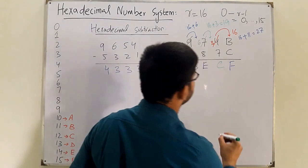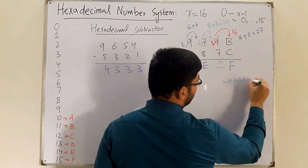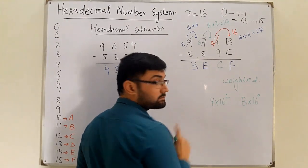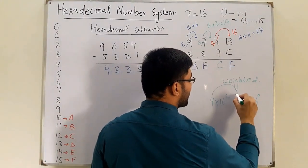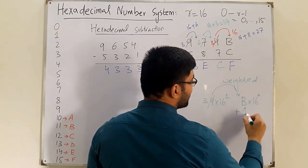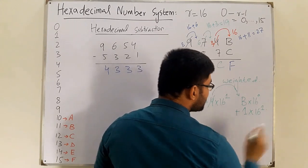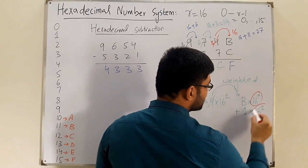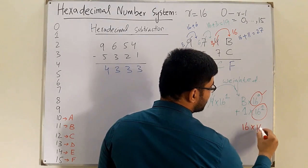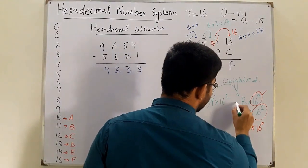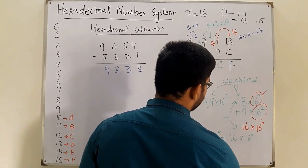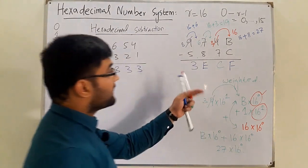The reason the borrow equals 16 is explained by the weighted number system. B's weight is 16⁰ and 4's weight is 16¹. When you borrow from the 16¹ position, it contributes 1 × 16¹, which must be converted to the 16⁰ position. So 1 × 16¹ = 16 × 16⁰. Adding: B × 16⁰ + 16 × 16⁰ = 27 × 16⁰, giving 27.